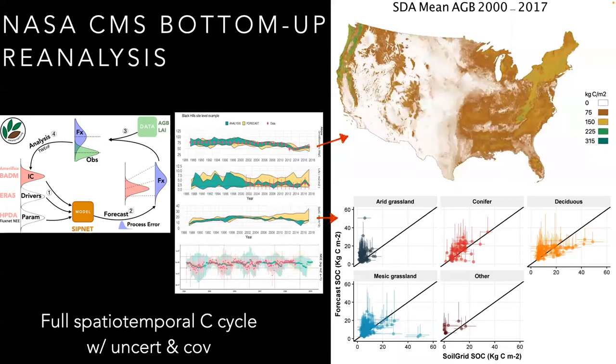We can scale all this up to produce spatiotemporal maps of carbon pools and fluxes and validate pools we didn't assimilate, such as soil carbon. Importantly, this bottom-up reanalysis provides a fully reconciled spatiotemporal estimate of all carbon pools and fluxes, which will help us better understand the variability in the carbon cycle, and this comes with full uncertainties and covariances across carbon pools, space, and time, which, among other things, make it particularly useful as a prior for top-down atmospheric conversions.